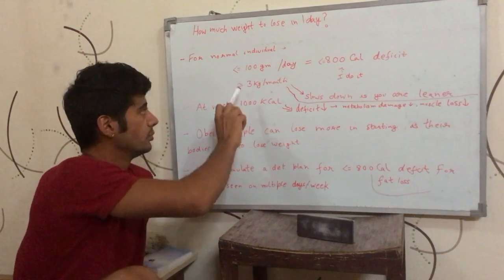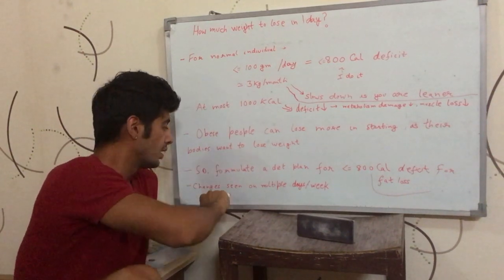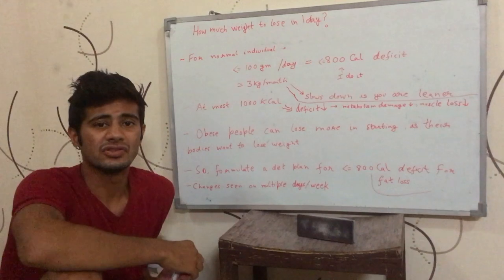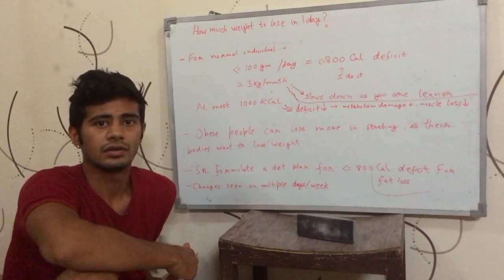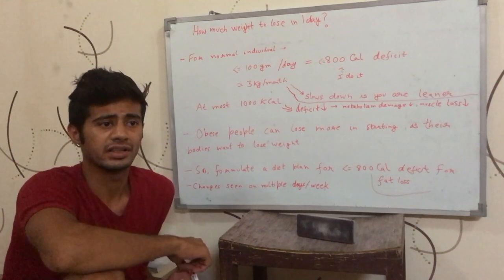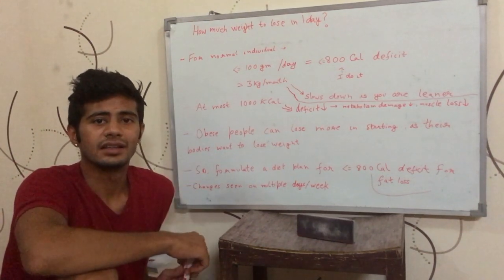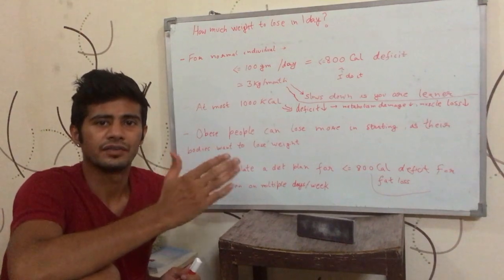then ideally you should be losing 100 grams per day. But you'll not be able to see that change every day on the weighing scale. You should wait for a couple of days, like five or six days or three or four days, and then you should be seeing a combined change of 300, 400, 500, 600 grams at once.